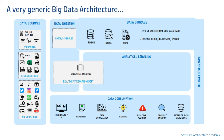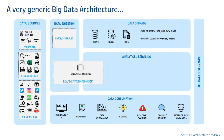Coming to the storage layer, there can be traditional relational databases to store structured data and at times semi-structured data as well. Then there can be one of many types of NoSQL databases to store structured, semi-structured, and unstructured data. Finally, we can have a Hadoop Distributed File System, which is a fault-tolerant distributed file system.